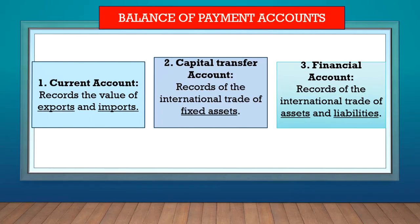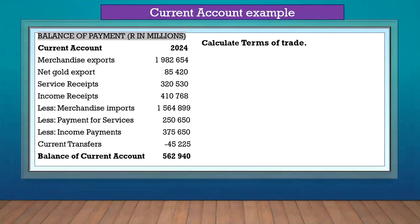Very important for exam purposes. Here is an example of a current account. We start off with merchandise exports. Exports bring money into the country — if we are exporting to other countries, they pay us, so we need to add exports. We then add the net gold export. This second item, the net gold export, you will only find in the South African current account, because gold is our biggest export.